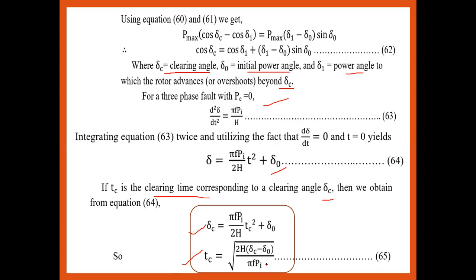So the critical clearing angle and clearing time play a very important role — the fault must be cleared before reaching this angle so that the equal area criteria is satisfied to determine stability. This angle is very important for transient state stability. Thank you so much. In the next lecture we will discuss another new concept with respect to transient state stability.